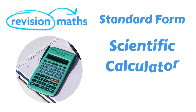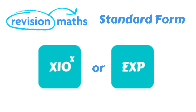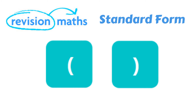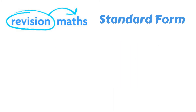Now let's move on to working in standard form using a scientific calculator. Firstly, you will need to know which buttons represent standard form. This can either be a button labelled X10X or in many cases a button labelled EXP. When using a scientific calculator to calculate standard form, you will need to use the bracket keys, sometimes referred to as the parenthesis keys.